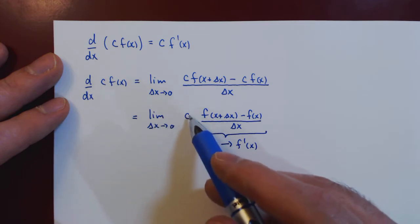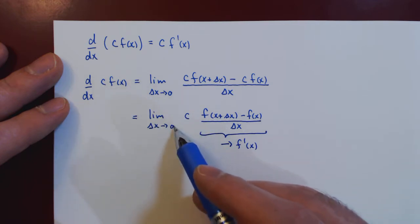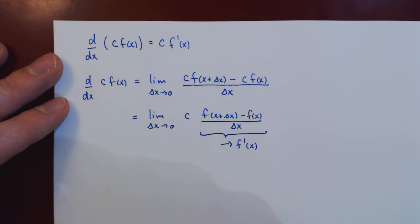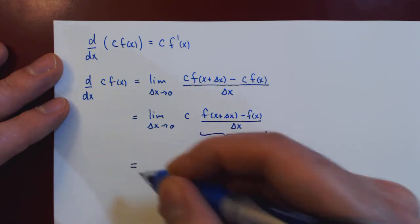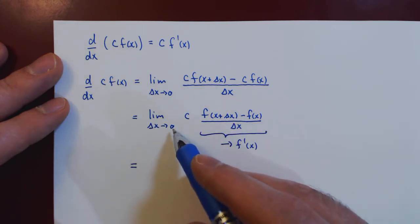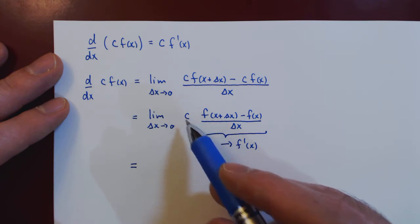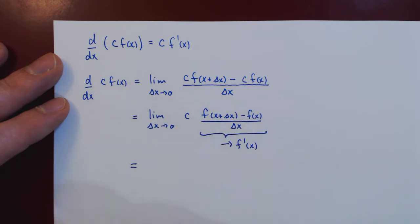And as c is a constant, as delta x approaches zero, c always remains c. So in the limit, as delta x approaches zero, we are left with c times f prime of x.